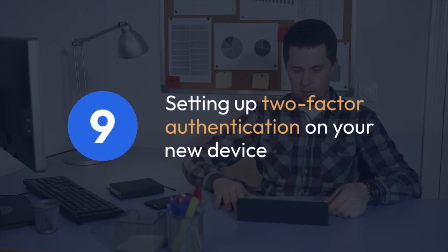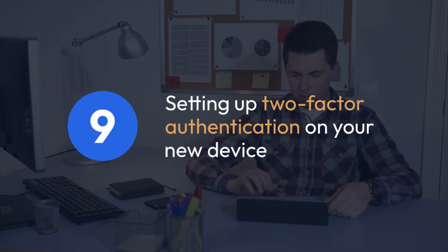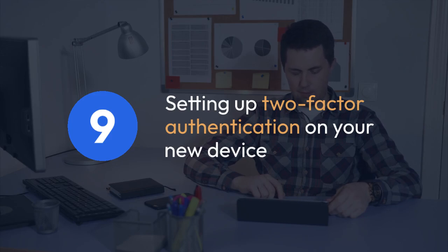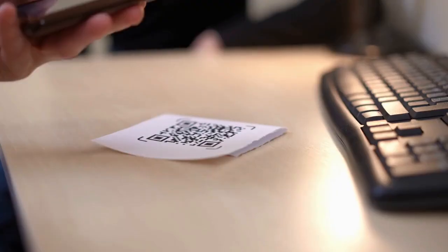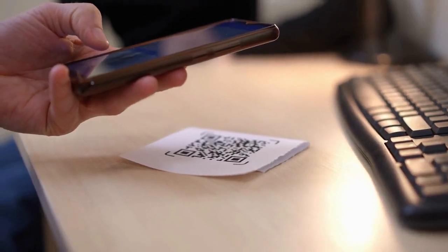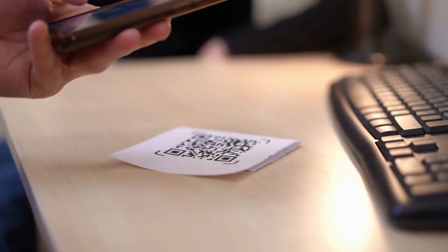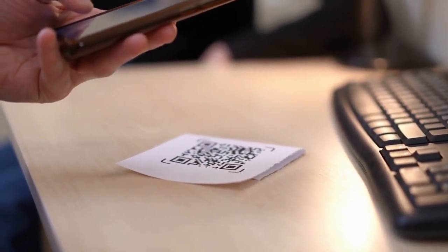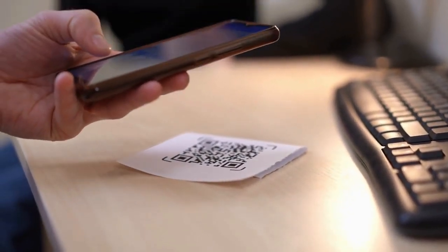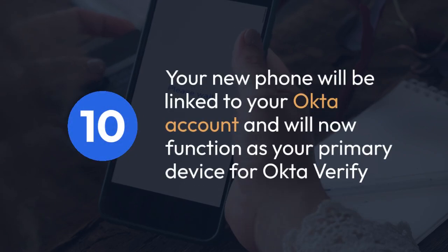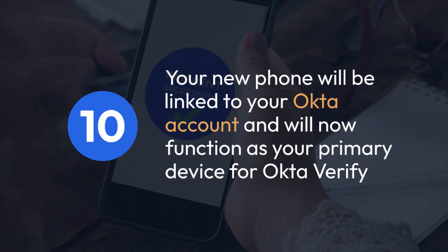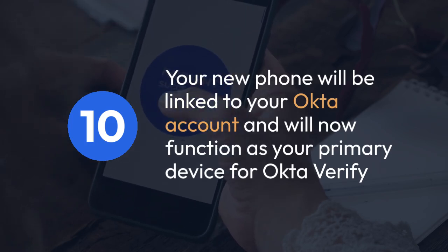9. Okta Verify will then guide you through the process of setting up two-factor authentication on your new device. This often involves scanning a QR code displayed on your computer screen, or receiving a code via email or SMS. 10. After successfully scanning the QR code or entering the code, your new phone will be linked to your Okta account and will now function as your primary device for Okta Verify.